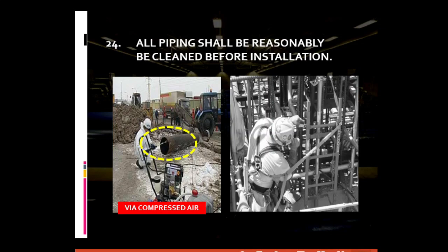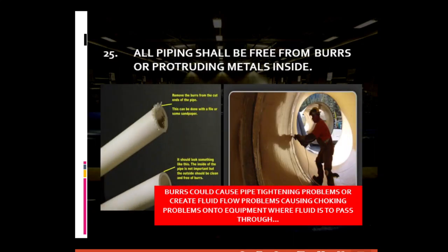For general piping requirement number twenty-five: oil piping should be free from burrs or protruding metals from the inside. Burrs are deformities or protruded metal parts mainly resulting from cutting the pipes. They should be removed as they can cause possible damage to the threaded pipe connections as well as pipe system components. Normally, a grinder is used to grind off these excessive protruding metals from the inside.